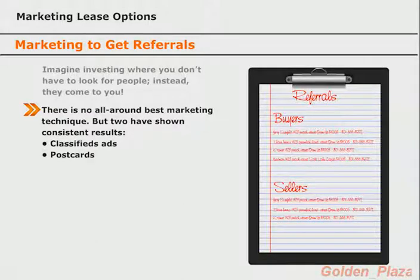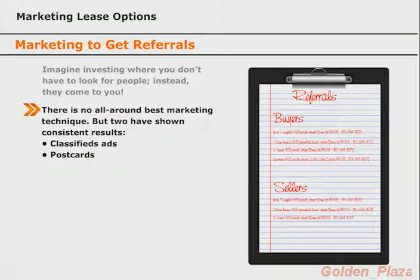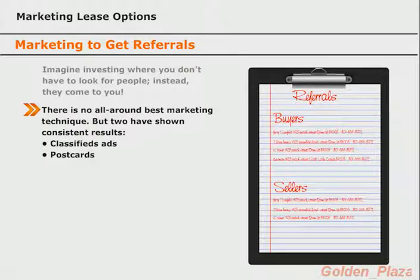There really isn't one universal best all-around marketing technique — each will get slightly different results depending on where you are. However, there are a couple that have been proven to be beneficial in almost every area, and they are advertising through classified ads as well as through postcards. Janet, can you explain how classified ads can work? The first thing to note is that putting them in local newspapers is better than posting them in more major papers. Local papers generally won't charge as much as leading major papers with a significantly wider distribution.